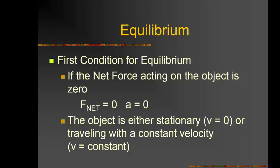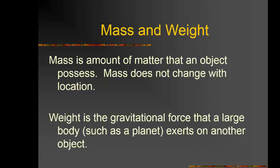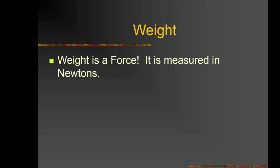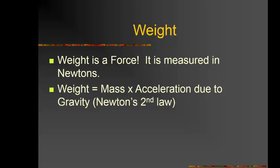Mass is the amount of matter that an object possesses. Mass does not change with location. Weight is the gravitational force that a large body, such as a planet, exerts on another object. Weight is a force and is measured in Newtons. Weight equals mass times gravitational acceleration: W = mg, where g is approximately 9.8 m/s².